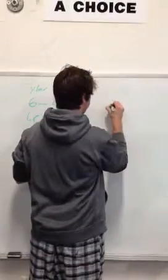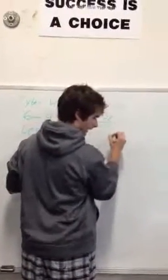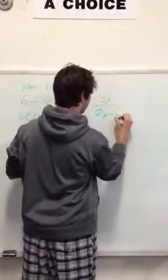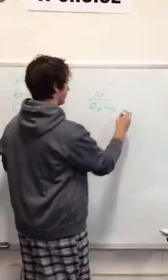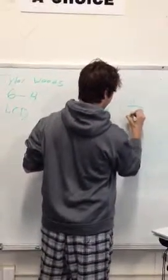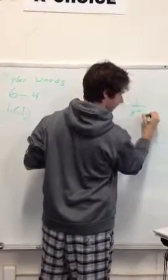Number 41, which is 3y over 2y minus 4. That's our first equation. And then our second is 1 over y squared minus 4.